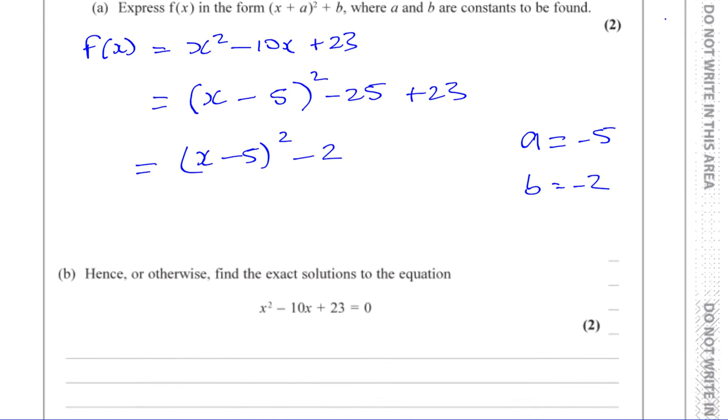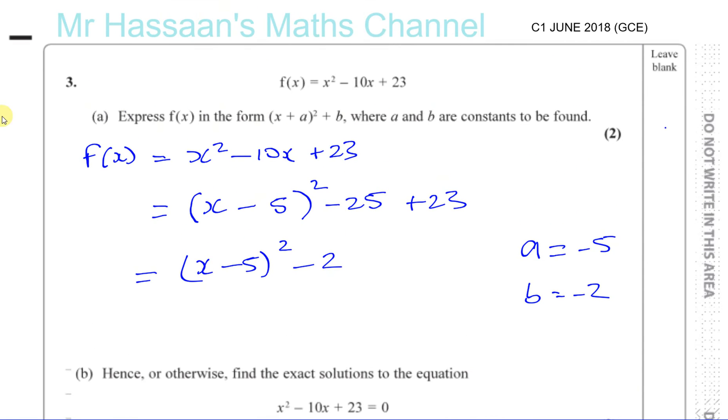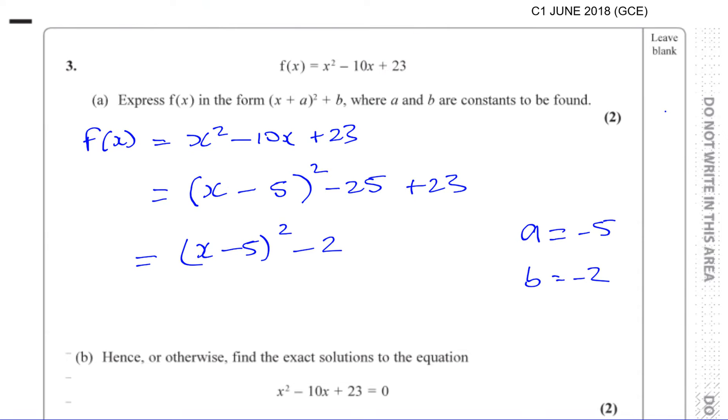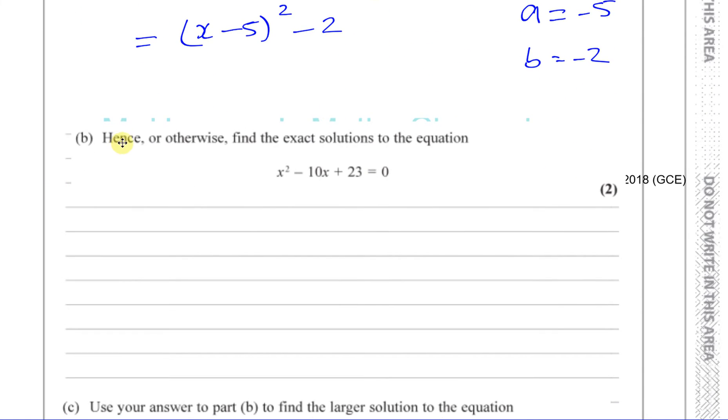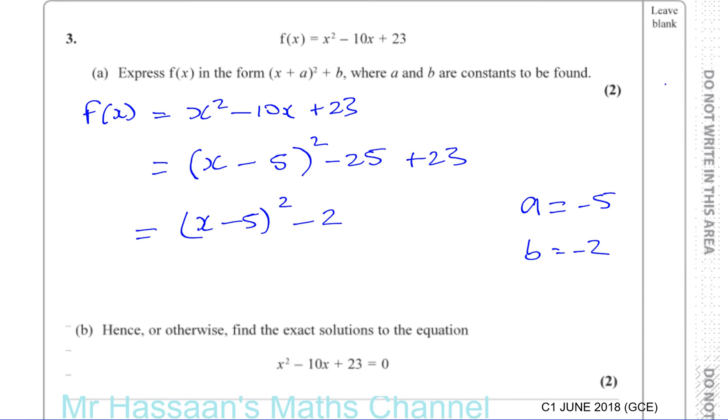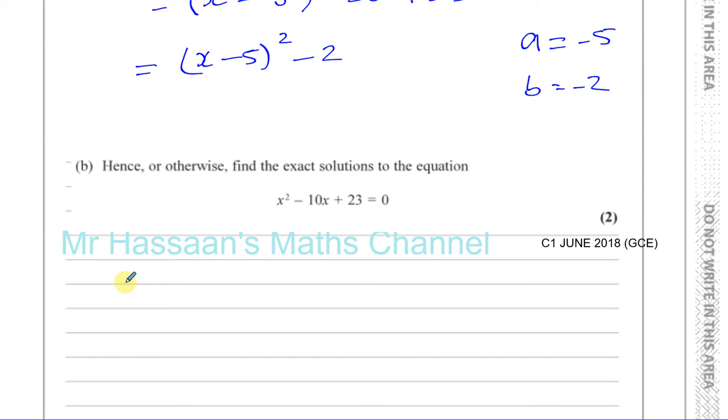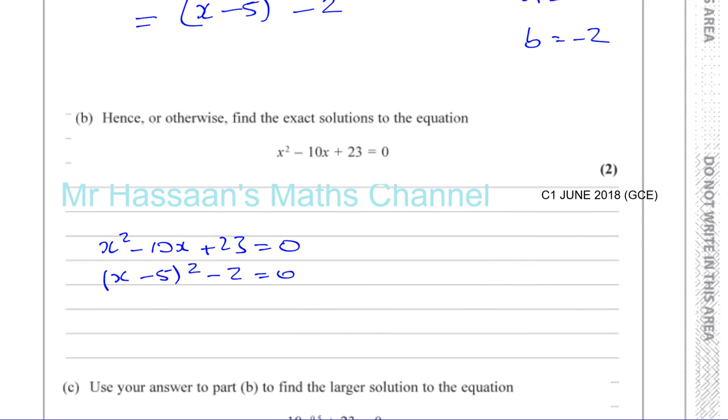All right, so then part b says, hence or otherwise, find the exact solutions to this equation: x squared minus 10x plus 23 equals 0. So hence or otherwise, we've got to find the exact solutions to this equation. x squared minus 10x plus 23 is exactly the same as this. It can be written as (x - 5) squared minus 2 equals 0. This is easy for us now to solve.